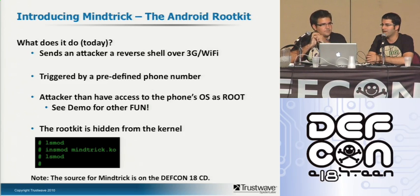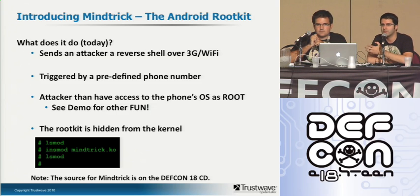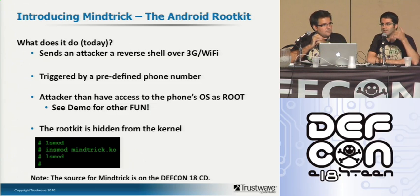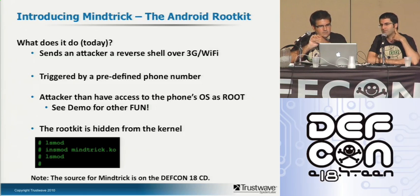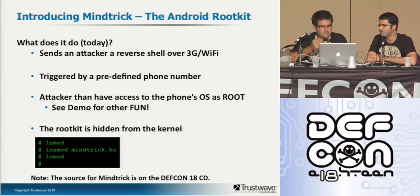Once triggered, the attacker has root access on the phone over a 3G or Wi-Fi connection — wherever you're located — and you can do whatever you want on the user's phone. The user may be on the phone talking while you're already on their phone. Also, the rootkit is hidden from the kernel itself — when you load the rootkit and do lsmod, it doesn't show up. The source is on the DefCon CD if you're interested in playing around with it.